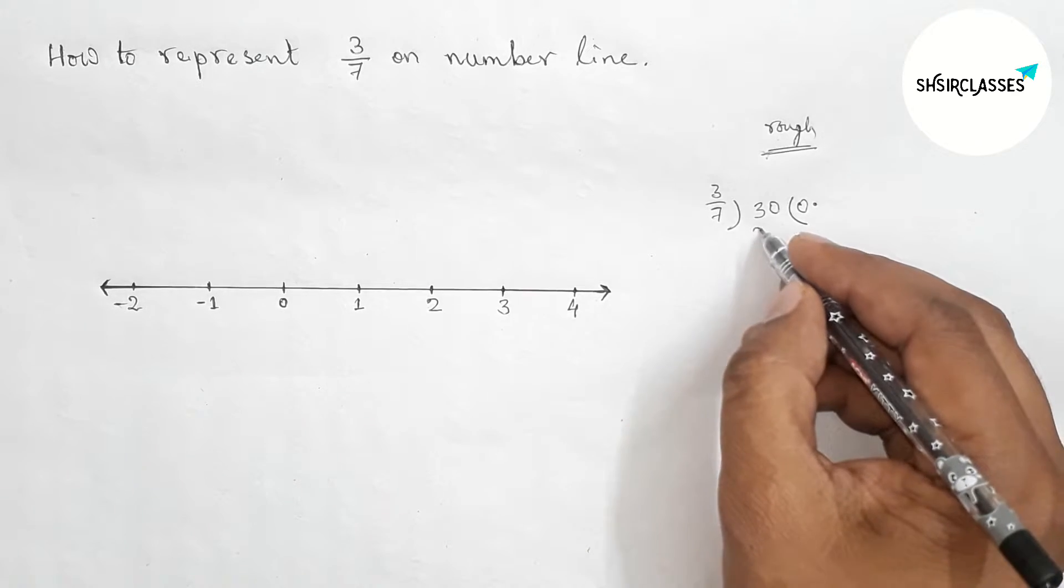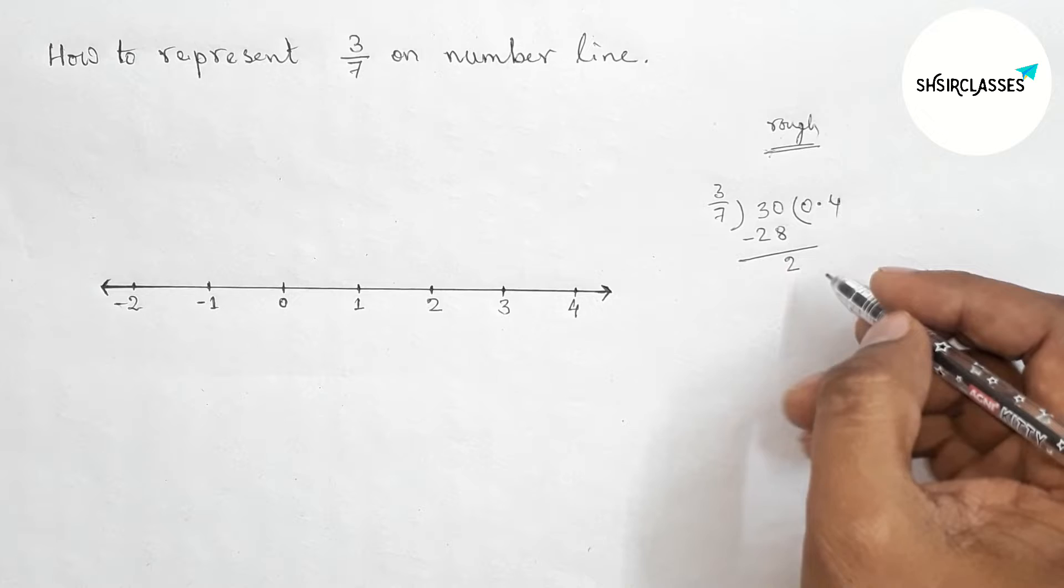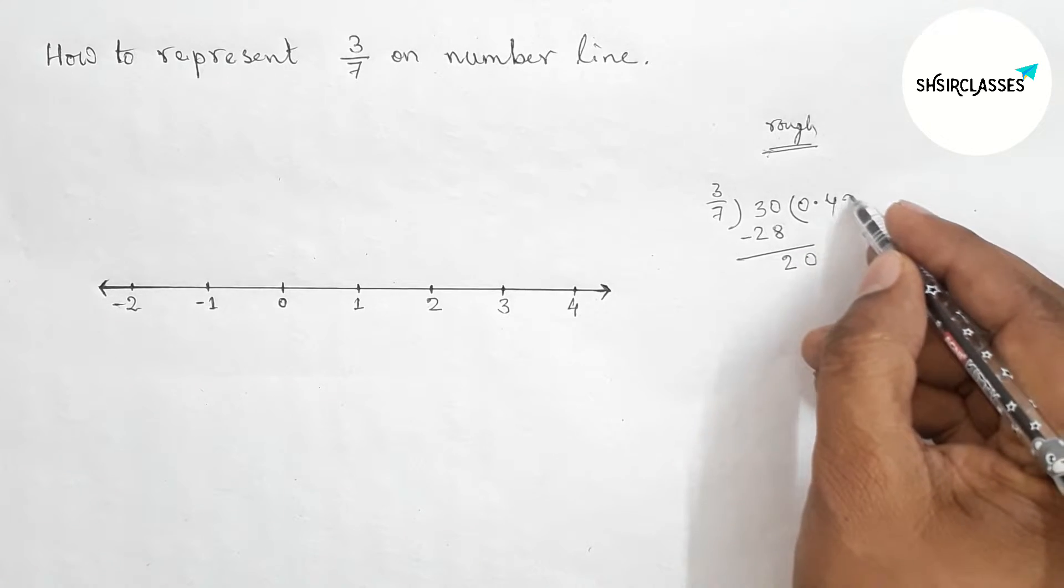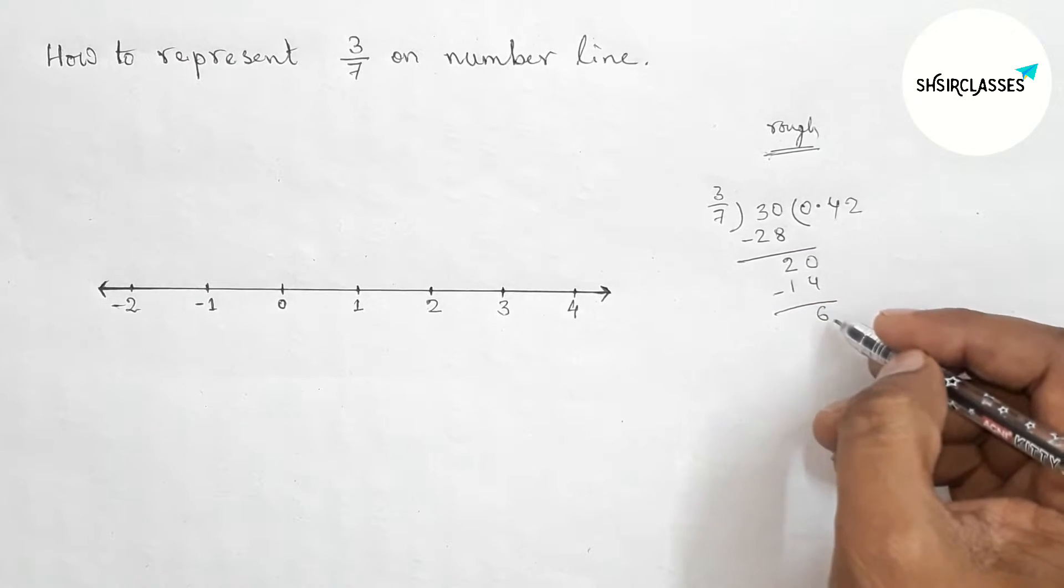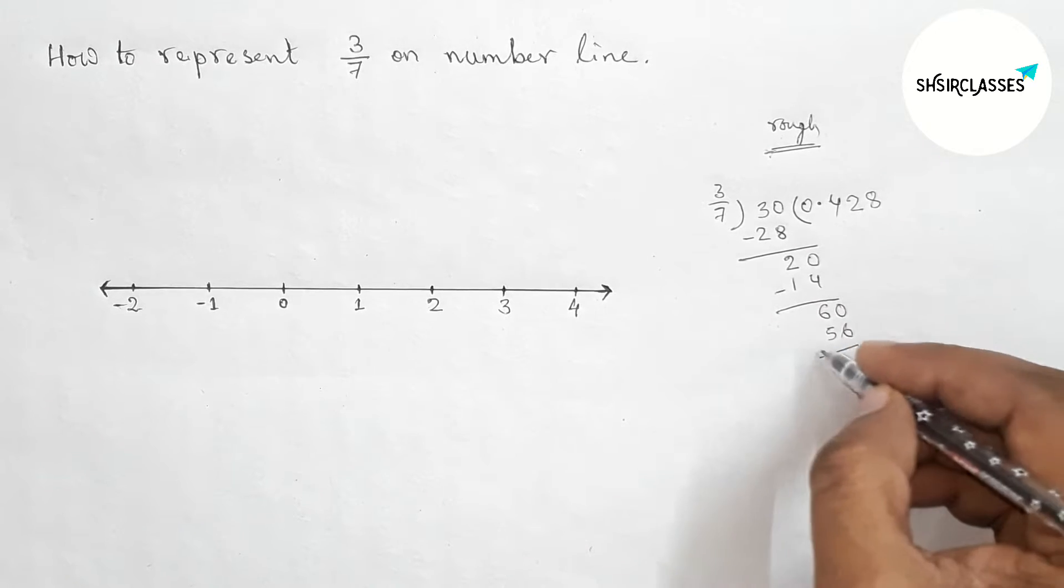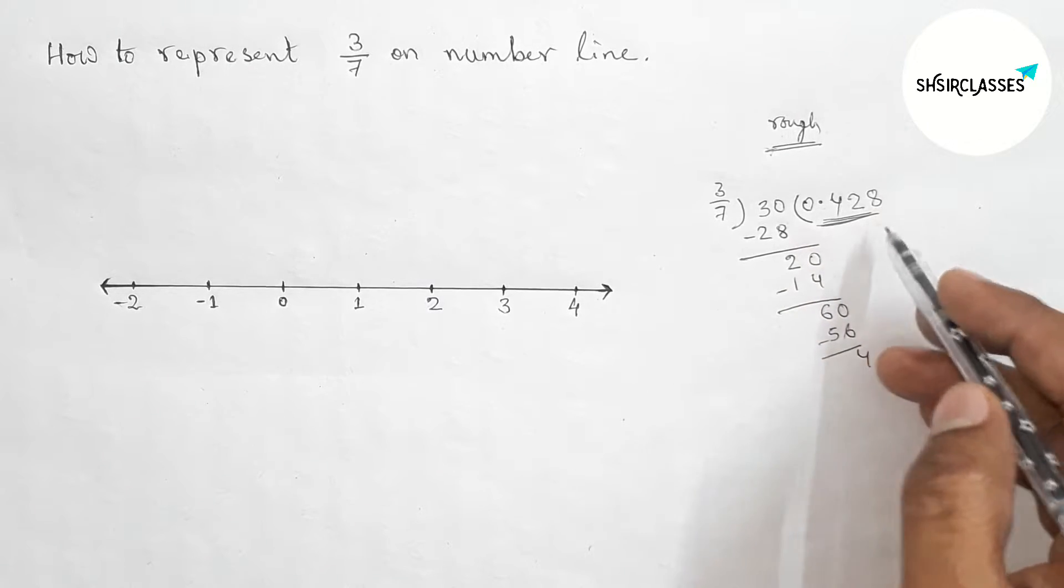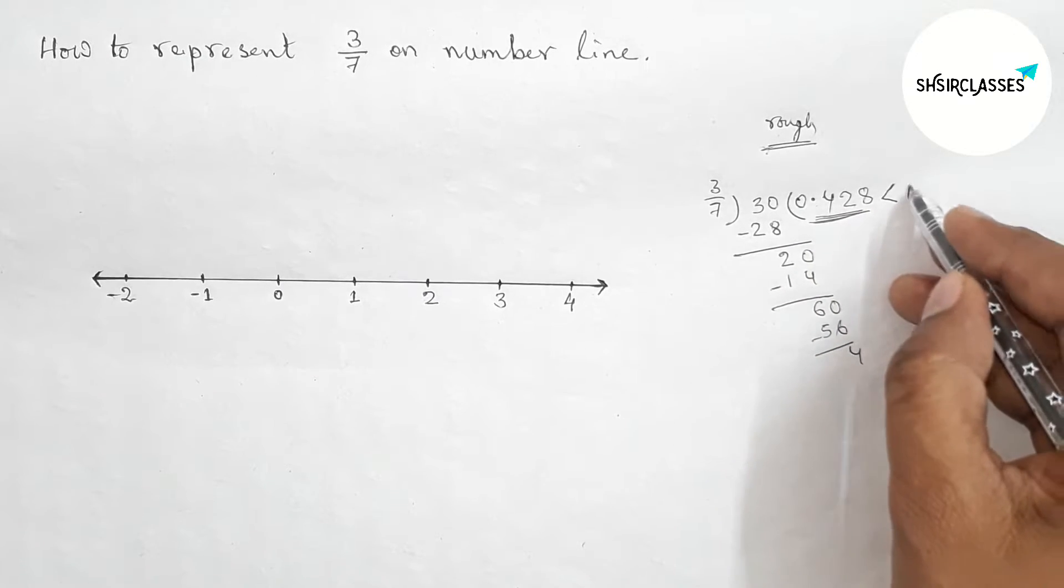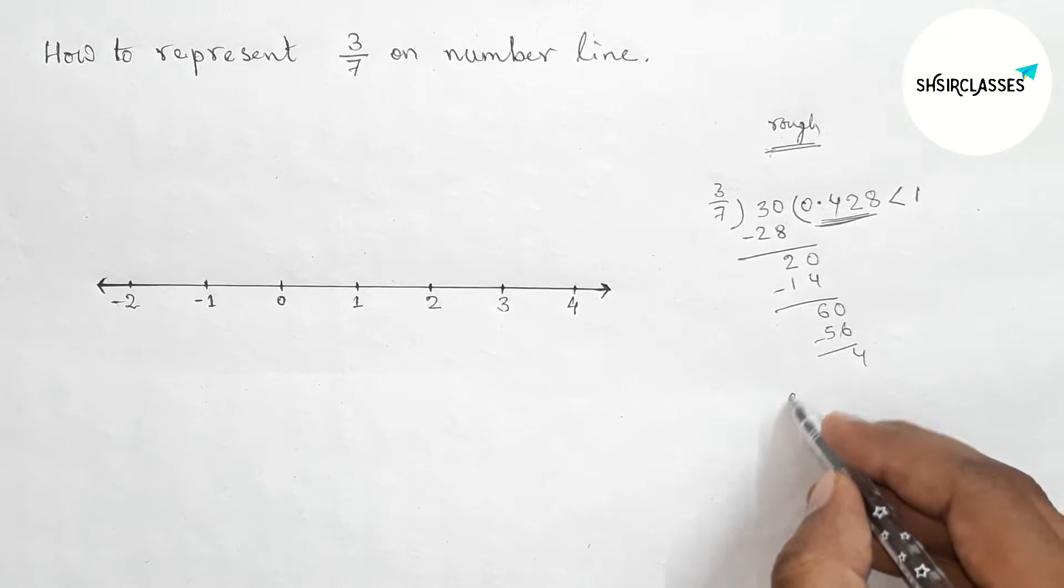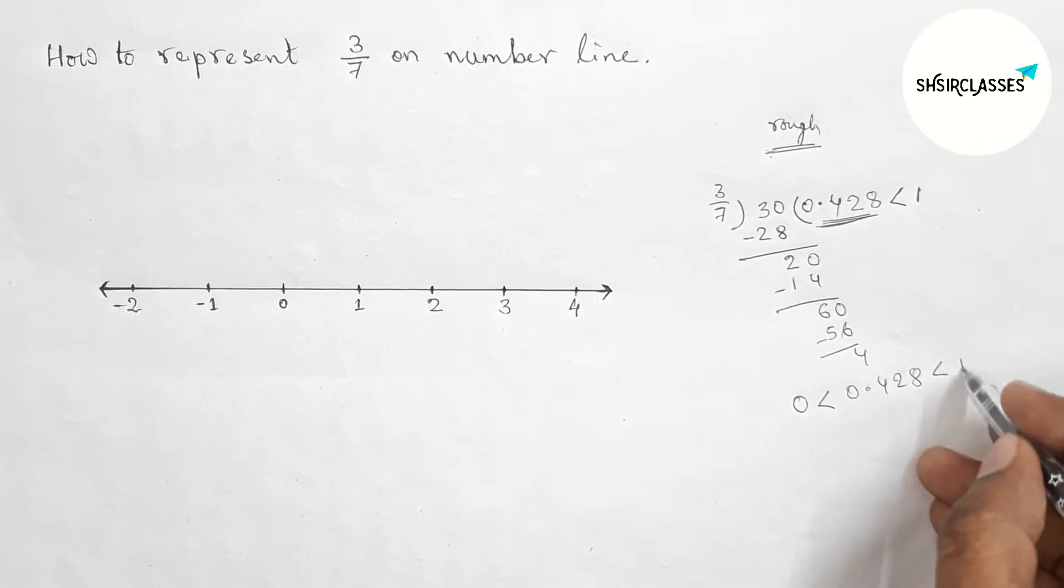I'm going to find the value of 3/7 roughly. So this is 0.427, sorry, 0.428. This is less than 1, obviously less than 1 and greater than 0.